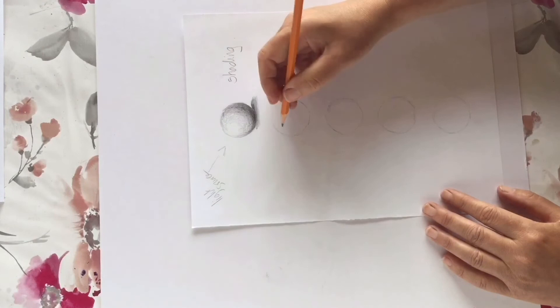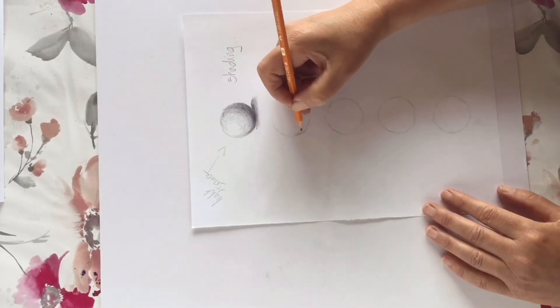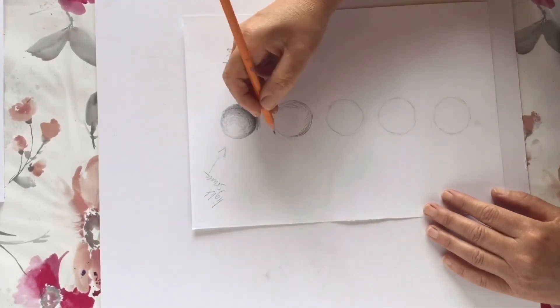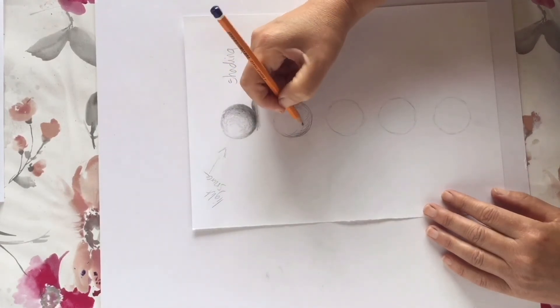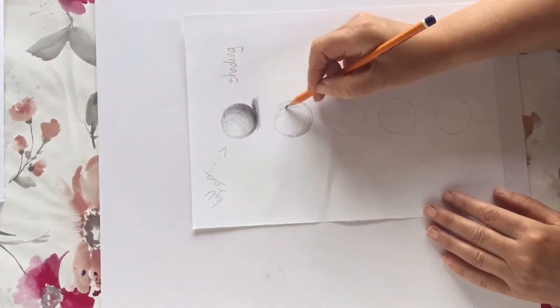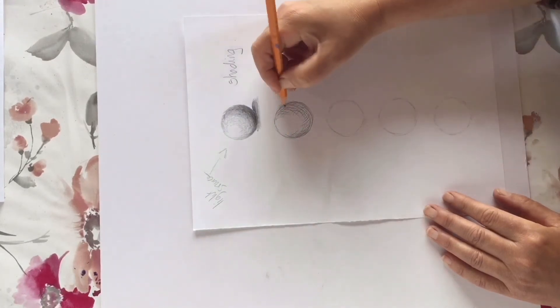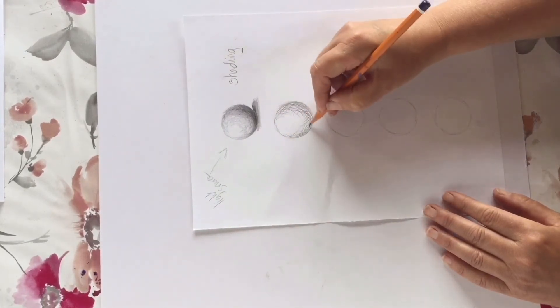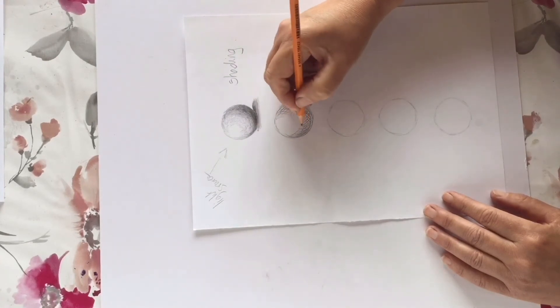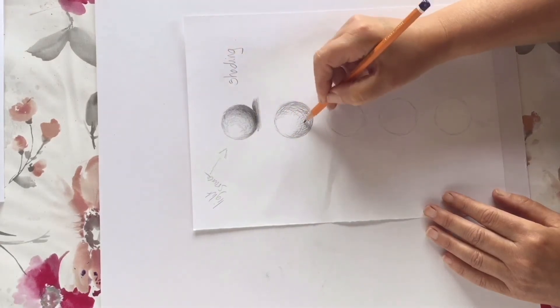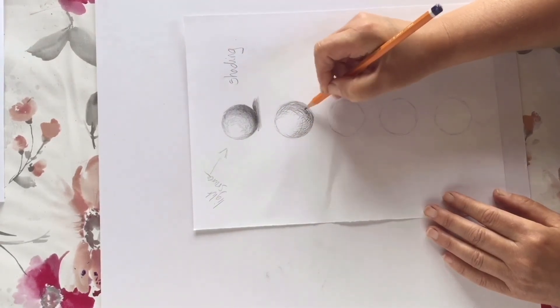The next technique we're going to look at is cross hatching. This is where you build up darker areas by using lines that cross over each other. The closer you put the lines together, the darker the area is going to look. If you just want to give an impression of a very light tone, you can just put a few lines here and there. But remember that you're moving around, that you're not putting straight lines if you're drawing onto a circular shape. Keep building up the lines to get the darker tones.